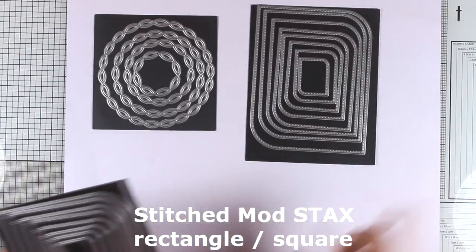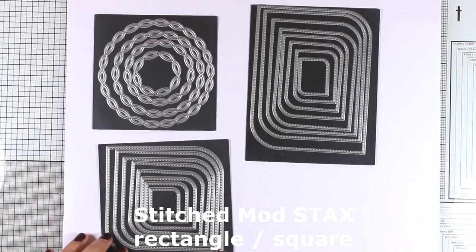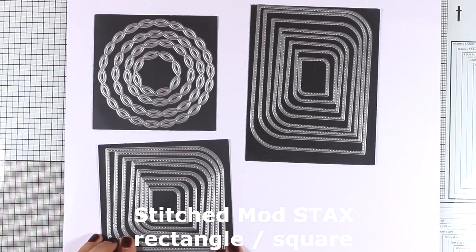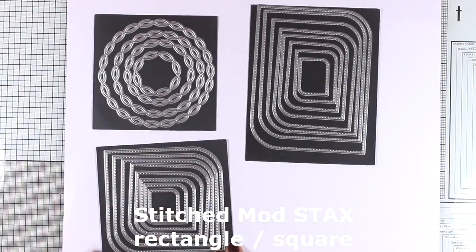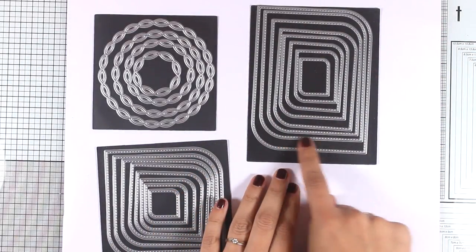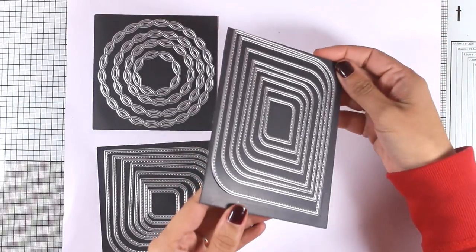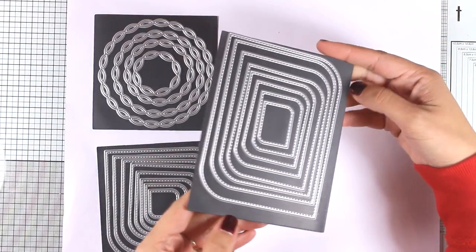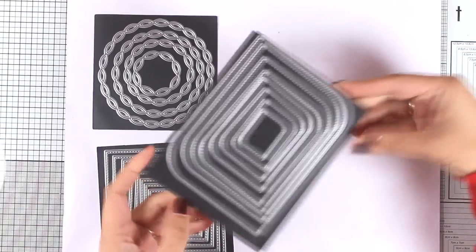There are two more sets of dies that you can use again and again. These are the Stitched Mod Stacks, and they come in rectangle and square shapes. They have been released previously but without the stitching, and I always like to have that stitching around my panels. I think it gives a beautiful design and finished look, so I know I will be using these a lot.